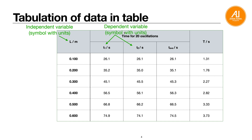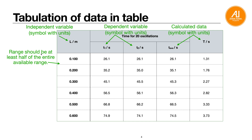The dependent variable is the variable you measure — for example, the time for 20 oscillations recorded from the stopwatch, which in this case is 1 DP. Then how you find the average T: these are called calculated values or processed data. They must also include the symbol and units. Remember: independent variable always on the left-hand side of the table.